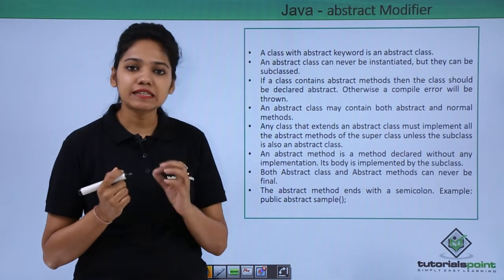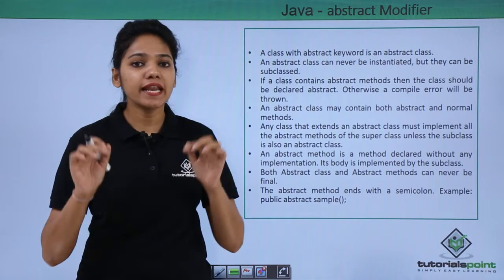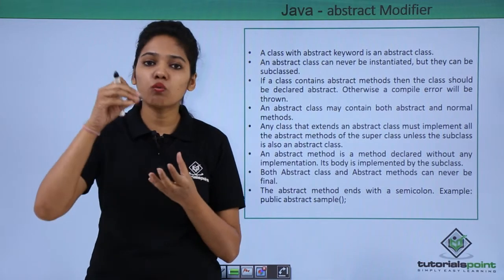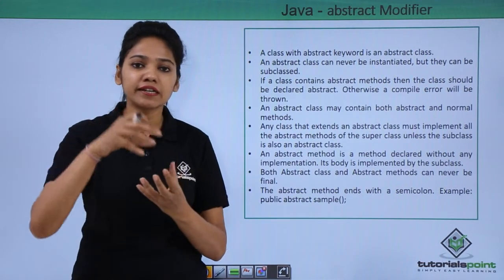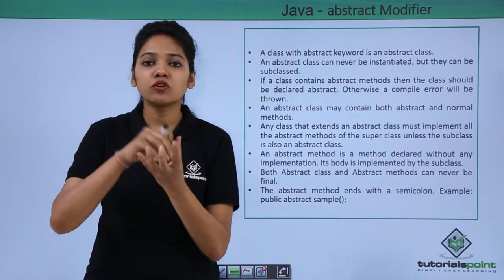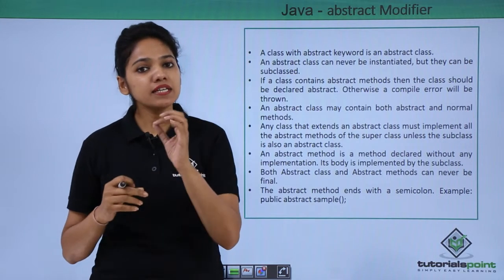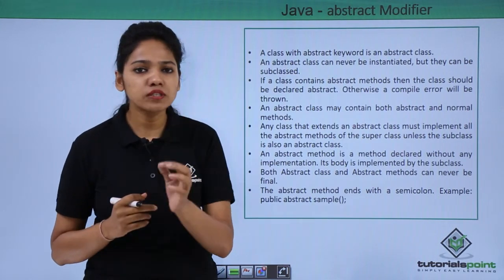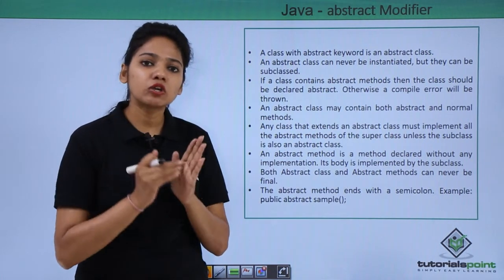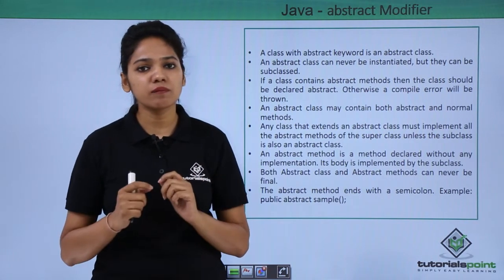Abstract is nothing but an outline of something. It means only an outline but the container is empty. You're not defining what is inside the container — you're just defining the size and color of the container, but not what is in it. So an abstract keyword is used for classes or members that you just want to declare but not instantiate or define.